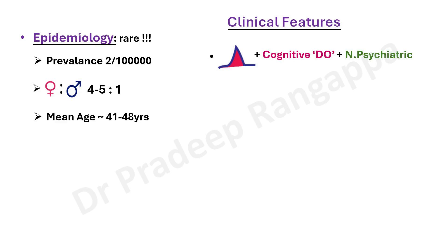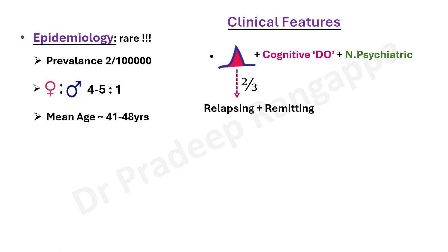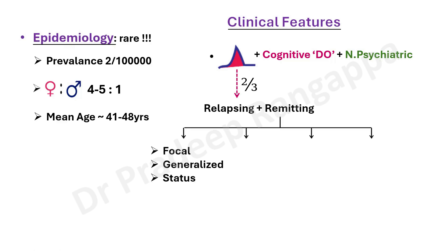For the clinical features, one should look at three important dimensions: seizures, cognitive disorder, and neuropsychiatric disturbance. Two-thirds of Hashimoto's encephalopathy cases will have seizures, and the seizures are relapsing and remitting in nature. It can be any type of seizures — focal seizures, generalized seizures, status epilepticus, myoclonus, tremors, or non-convulsive status epilepticus — along with cognitive disorder and neuropsychiatric manifestations.